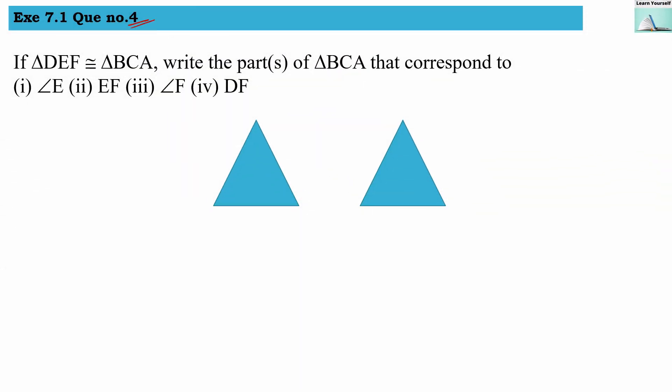Question number 4: if triangle DEF is congruent with triangle BCA, write the parts of triangle BCA that correspond to angle E, EF, angle F, and DF. Let us first draw two triangles and give them names accordingly. The first triangle has vertices D, E, F as given in the question.